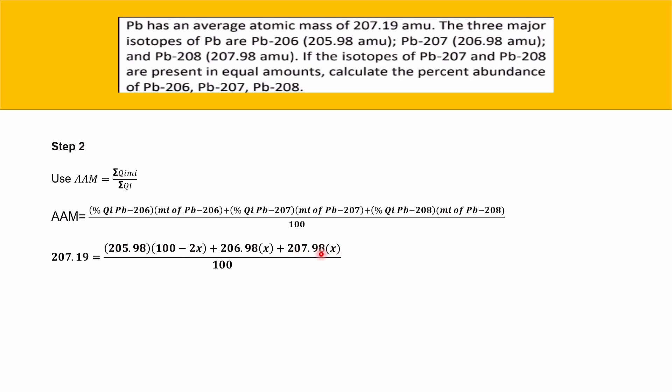We can simplify by moving the 100 to the other side and multiplying 207.19 by 100. In maths, we need to expand and then isolate the numbers to find the value of x. Expanding gives: 20,719 = 20,598 − 411.96x + 206.98x + 207.98x.